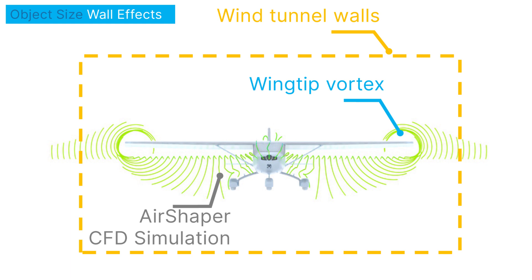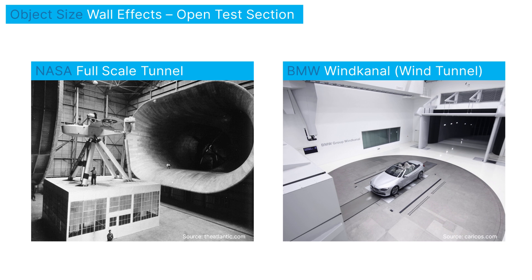One example of this are the vortex structures around the wingtips of a drone or a plane. In some cases, you'll even see wind tunnels employing an open test section, partially to overcome some of the challenges posed by the blockage factor and the effect of the walls.